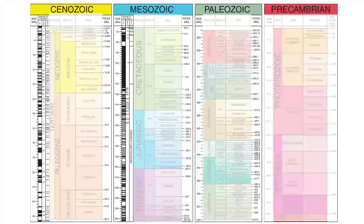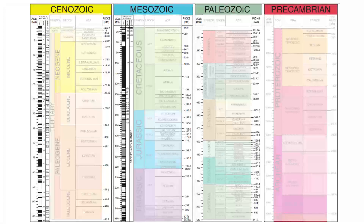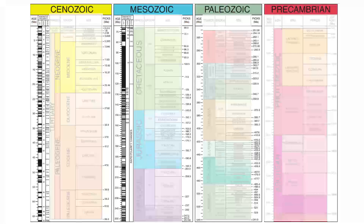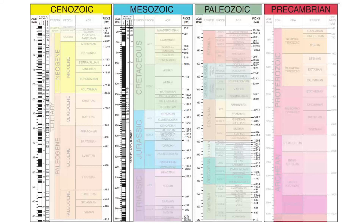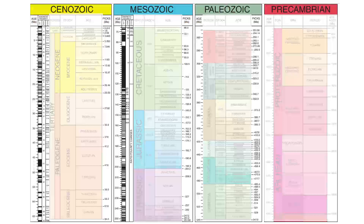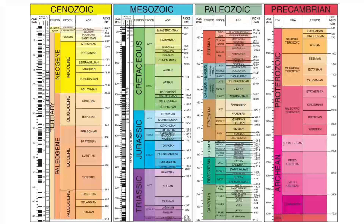Now let's look at all the other stuff on here. So far we've just been looking at the names and the relative ages of the rocks. Remember, all of these relate directly to rocks found on Earth and the fossil evidence in them. All this other stuff is the non-fossil evidence — things like radiometric dates that give us the absolute age, and the magnetic polarity of the rocks. So now hopefully you know how to read the geologic time scale.